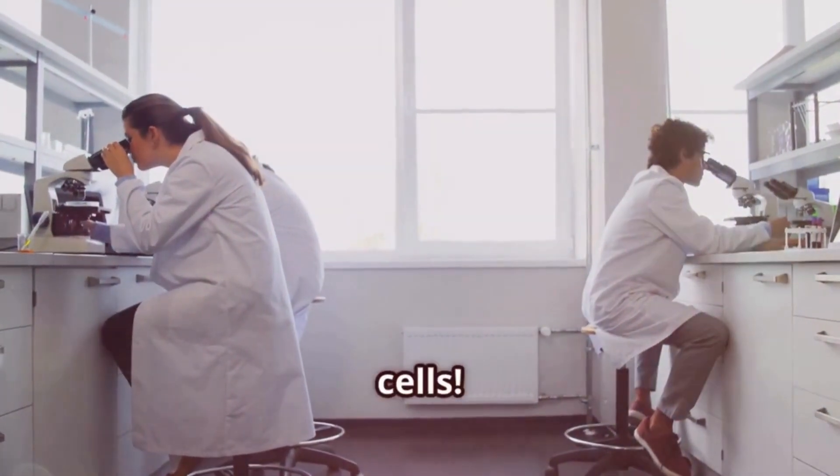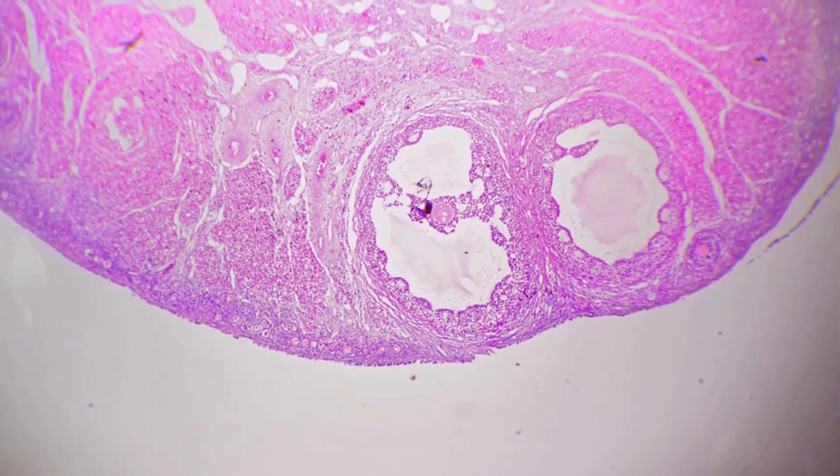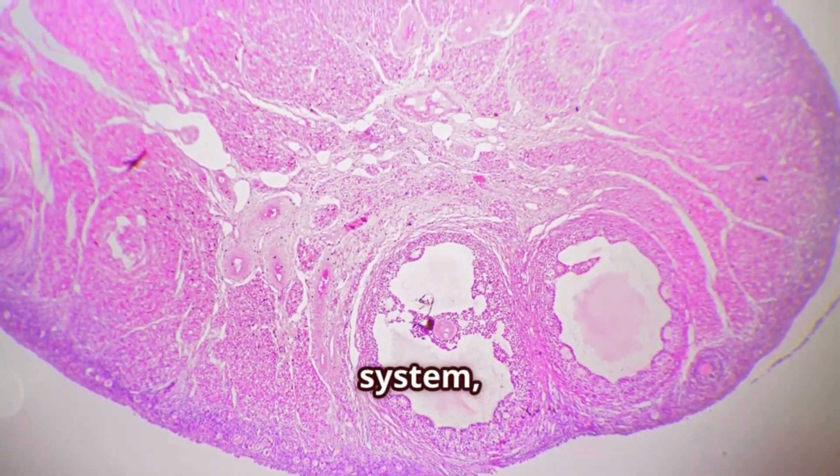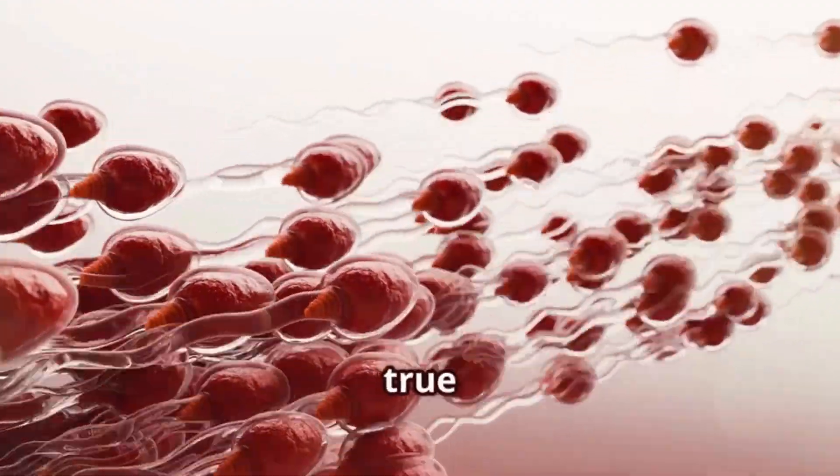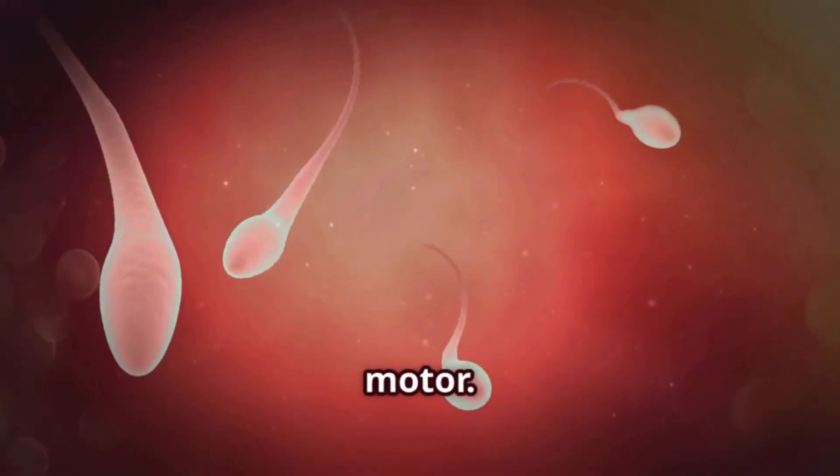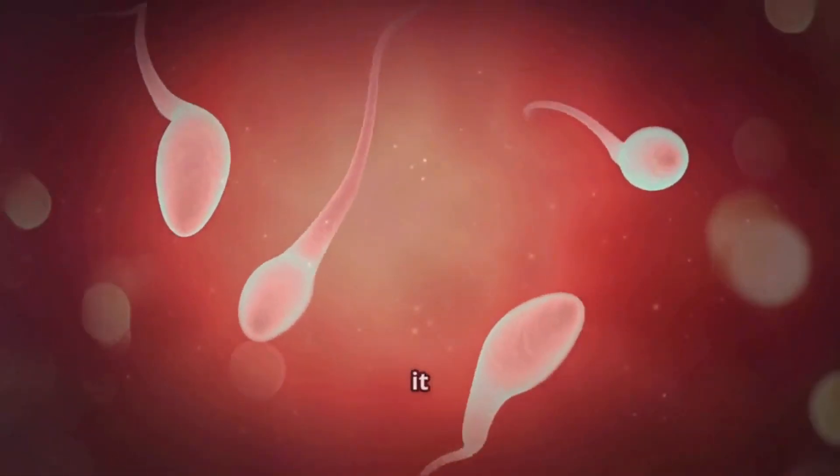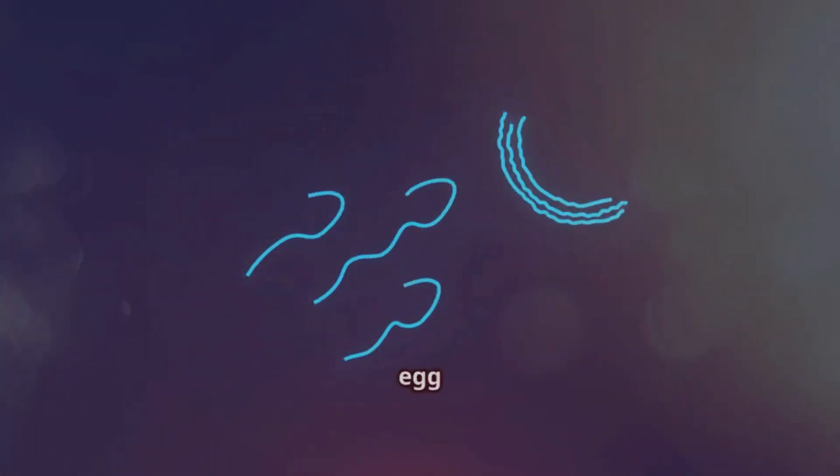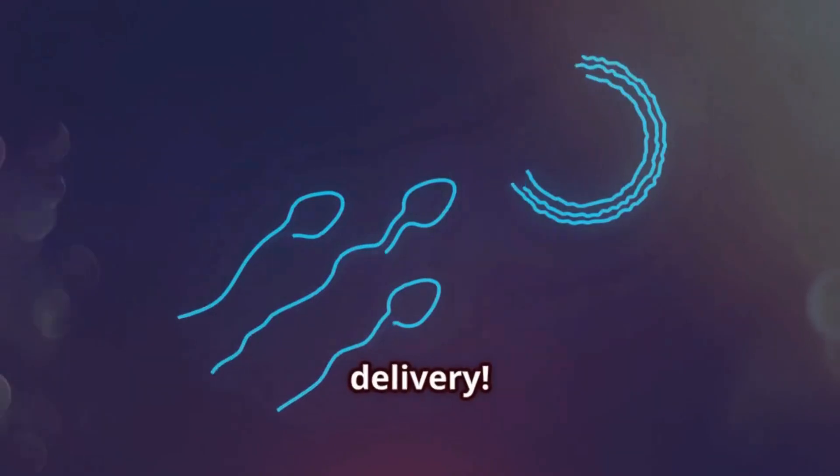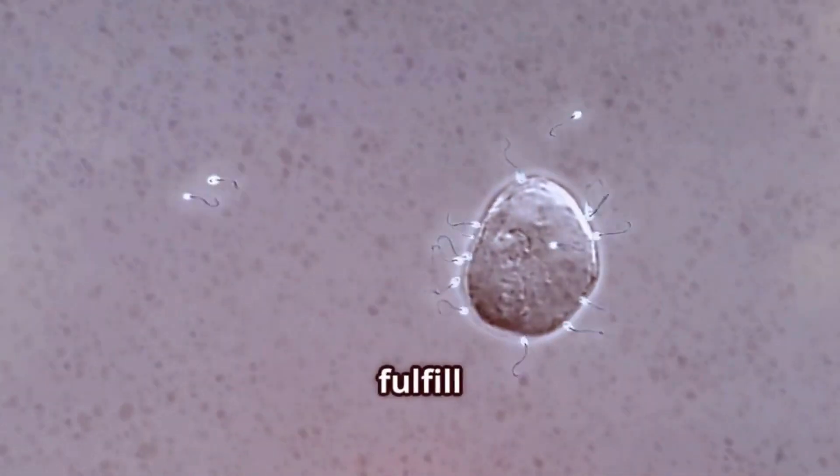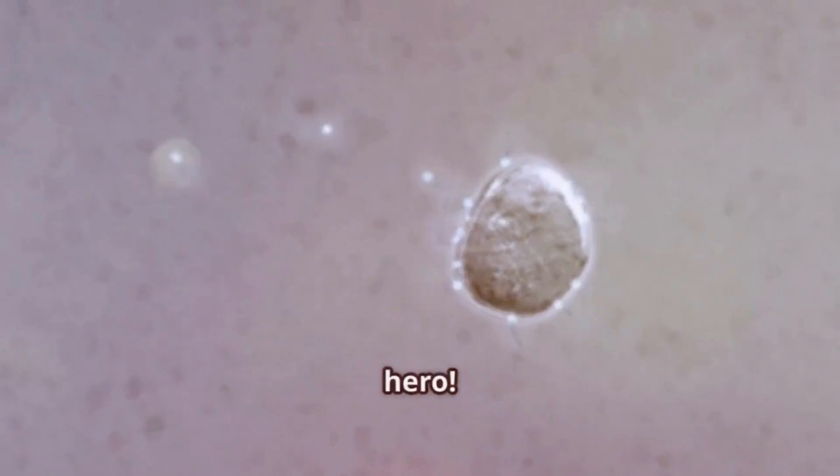Our first stop takes us to the reproductive system, where we meet the sperm cell—a true champion swimmer on a mission. This little guy is built for speed with a powerful tail called a flagellum, propelling it forward like a tiny motor. Its streamlined shape helps it glide through fluids, and its sole purpose is to deliver genetic material to the egg cell. Talk about a critical delivery! Just imagine the journey it takes, navigating a microscopic obstacle course to fulfill its destiny.